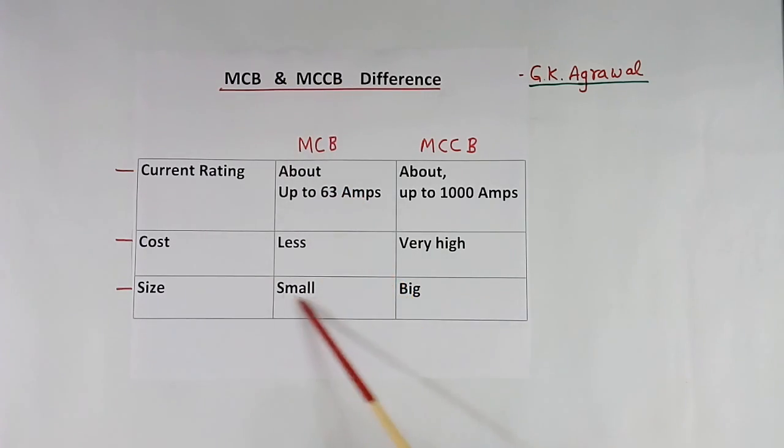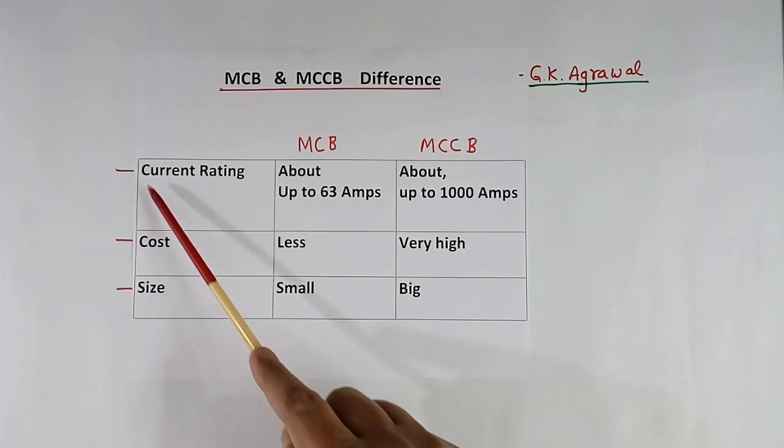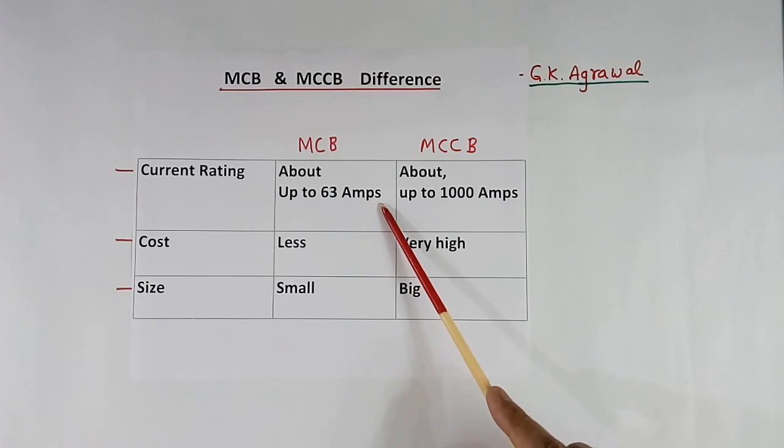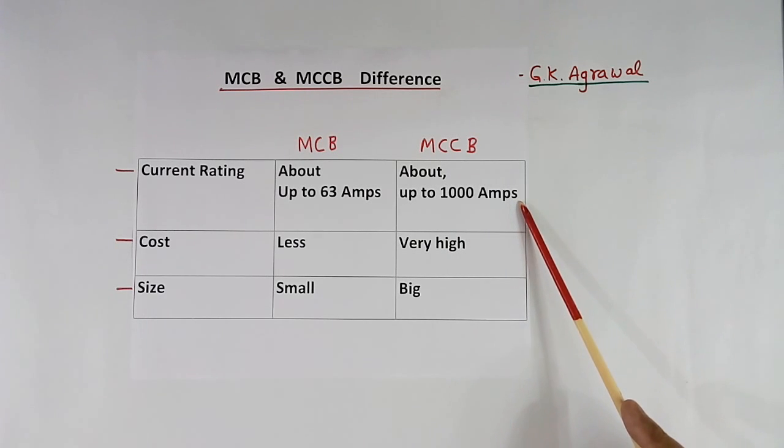This is about MCB, this is about MCCB. The first difference is current rating. MCB are available up to 63 amperes. MCCB are available up to 1000 amperes current rating.